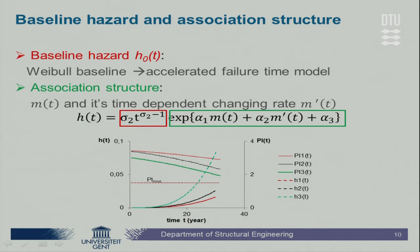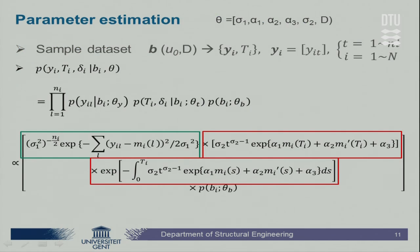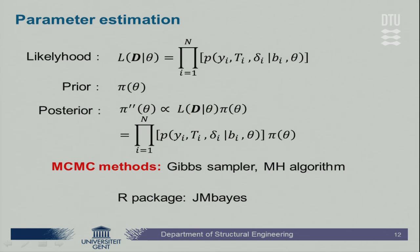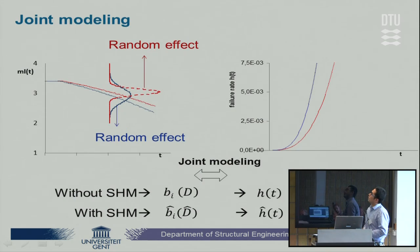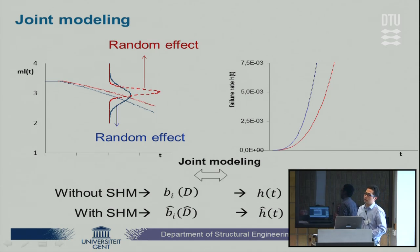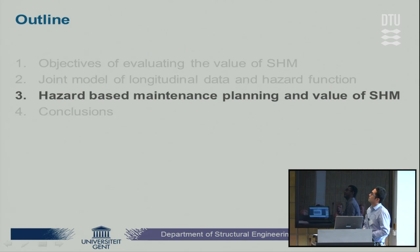With this functional form available, we can do parameter estimation. MCMC methods can be used for parameter estimation, and there are also R packages available named JMBayes to do the parameter estimation. To sum up this part, for the joint modeling, the objective is to derive the hazard function which is dependent on the random effect. The different probabilistic model of the random effect will lead to a different hazard function. And as soon as this hazard function is available, we can do hazard-based maintenance planning and also calculate the value of SHM.